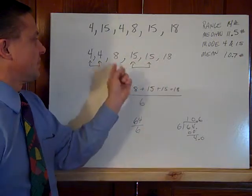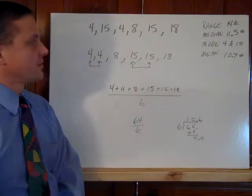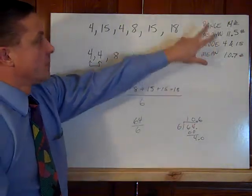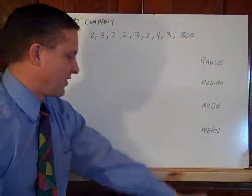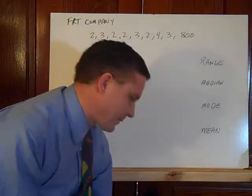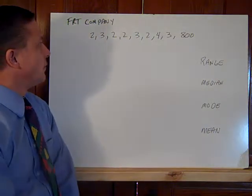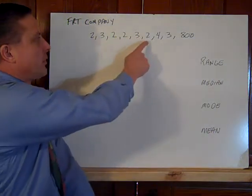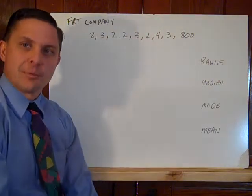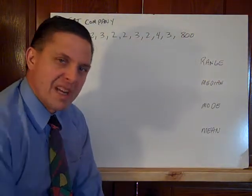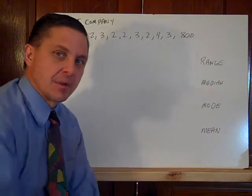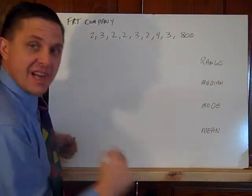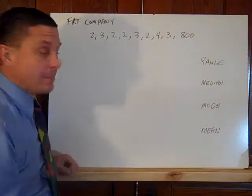To talk about this set of dogs, 10.7 might not be a bad way to describe it. But when you have sometimes different sets, you get different things. Take a look at this one. This is a freight company. This freight company shipped a two pound, a three pound, a two pound, a two pound, a three pound, a two pound, a four pound, a three pound, and an 800 pound package.